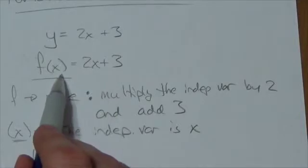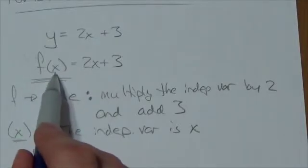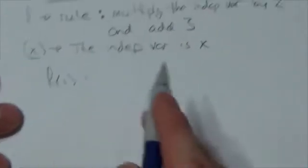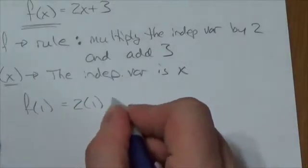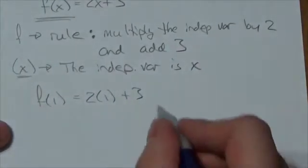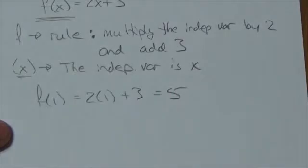Remember, the x in this case here, in this version of it, was the independent variable. Well, now that's 1. So this becomes 2 times 1 plus 3, and then simplify that to be the answer 5.